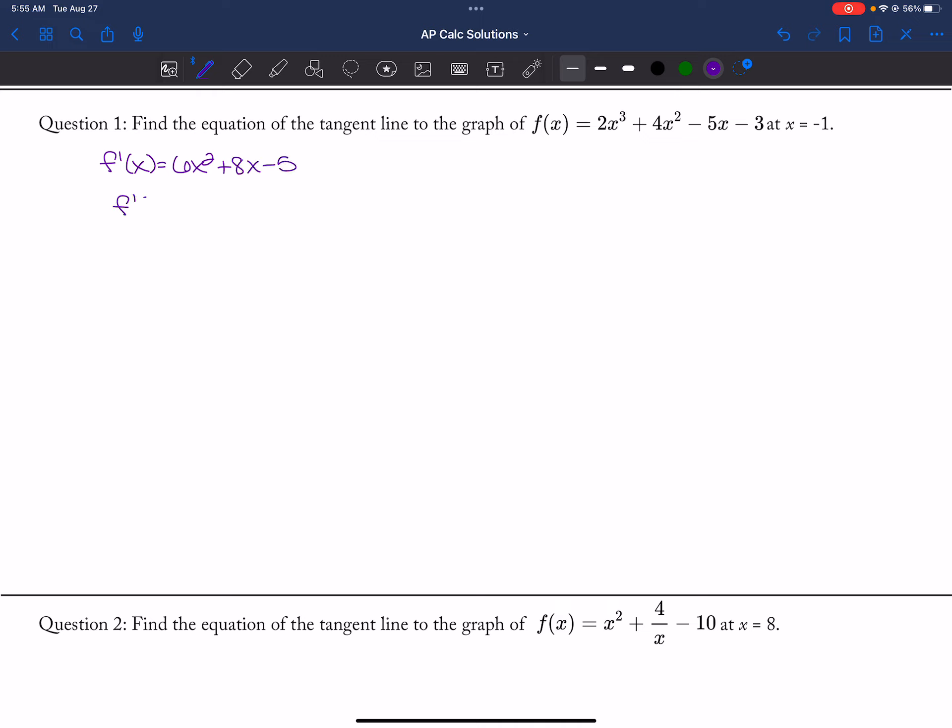So I want f prime of negative 1. So 6 times negative 1 squared plus 8 times negative 1 minus 5. So I get 6 minus 8 minus 5, that's negative 2, so that's negative 7.